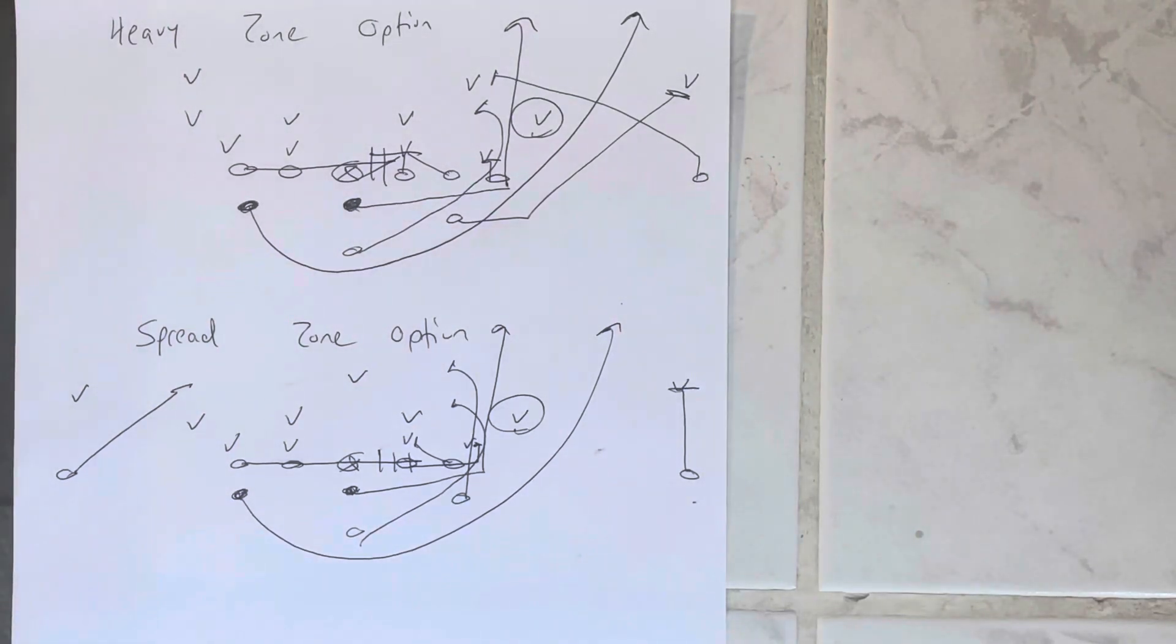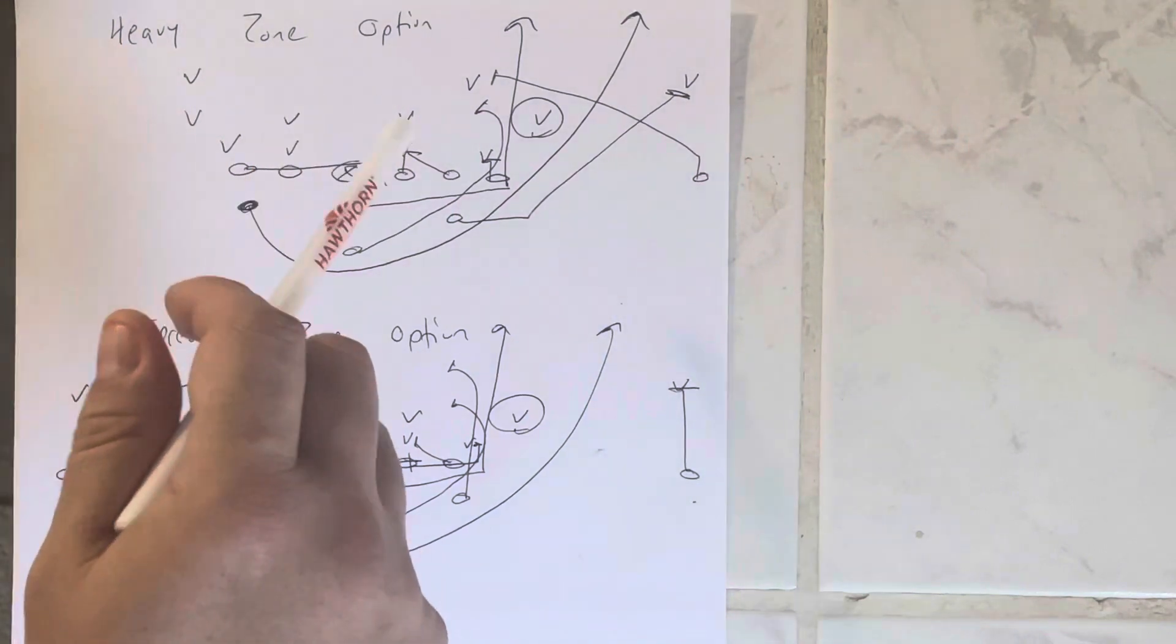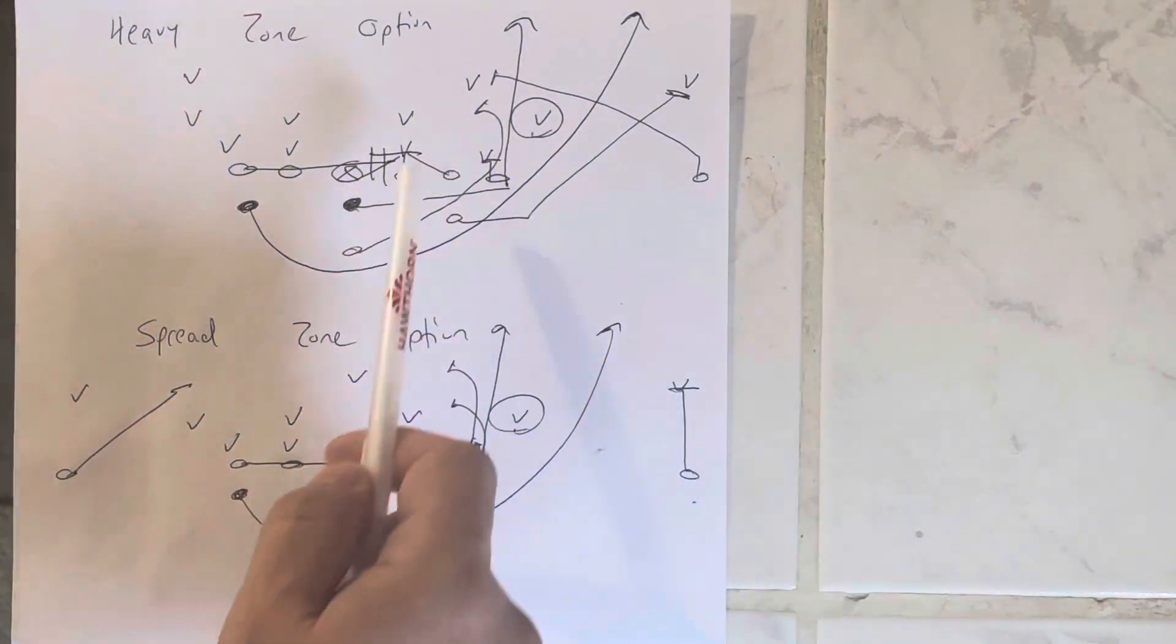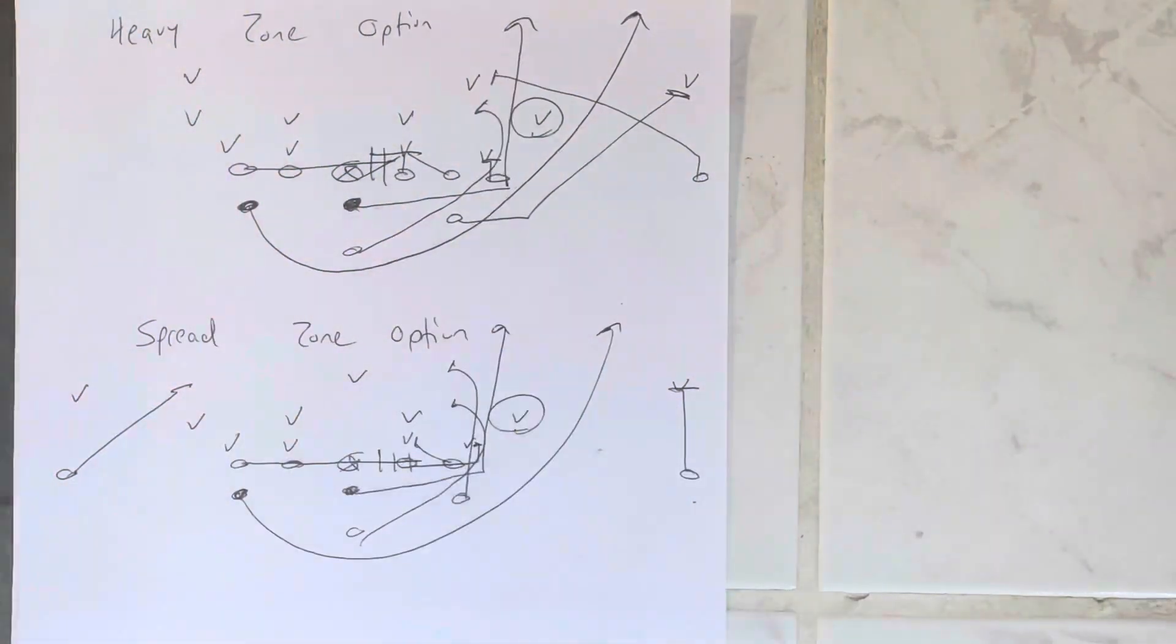So my goal with this video is for you to understand the importance of surface when you run zone option. Having a third guy on the surface makes all the difference. Running it out of the heavy formation makes those zone option go a lot better. And a lot of times you get a numbers advantage because they slide the safety instead of bringing a full man over. And that's how you get them.